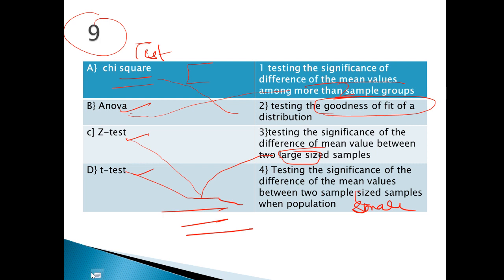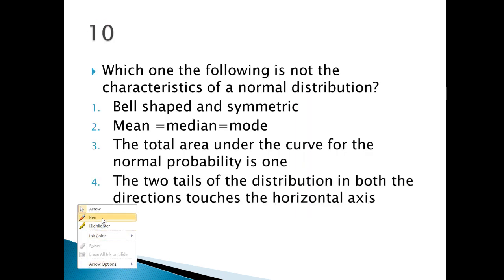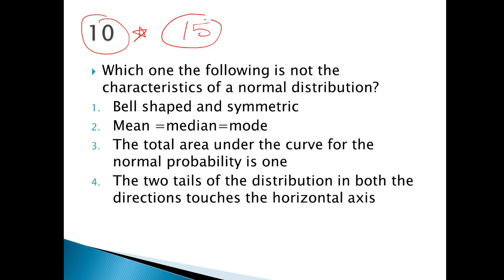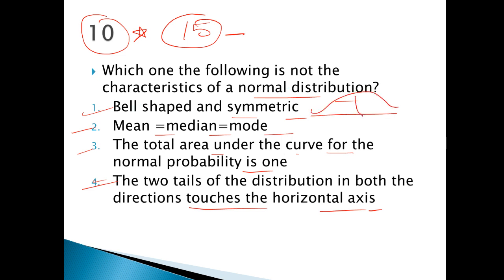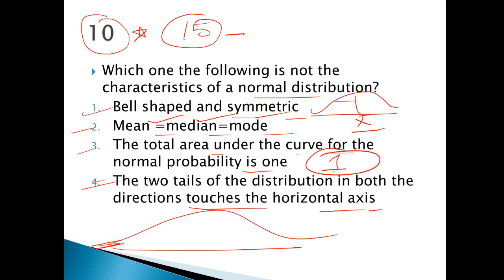I will make a dedicated class on these tests as well. Today's lecture was made just to give you an overview of the subscription class and to notify you about the discount, because there are 15 days left. Which of the following is not a characteristic of normal distribution? Bell-shaped and symmetrical — correct. Mean equals median equals mode — correct. Total area under curve is one — correct. Two tails touch the horizontal axis — this is wrong. The tails appear to touch but never touch. So that is the incorrect feature.